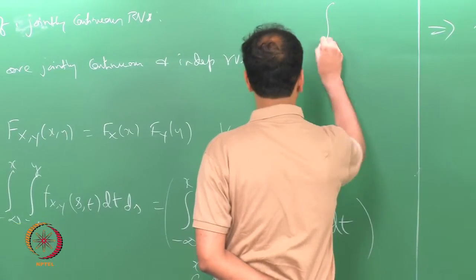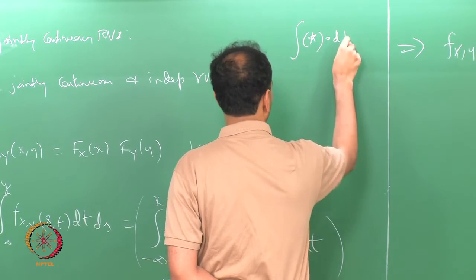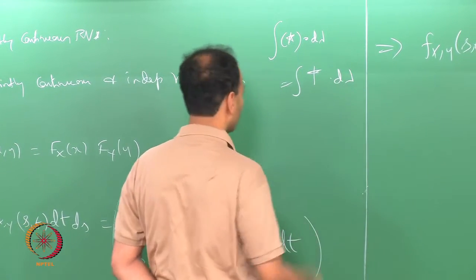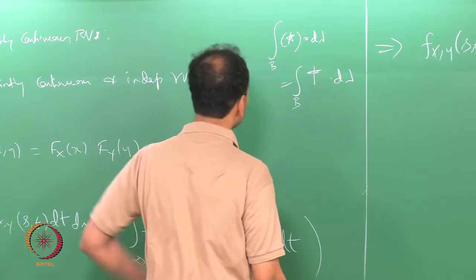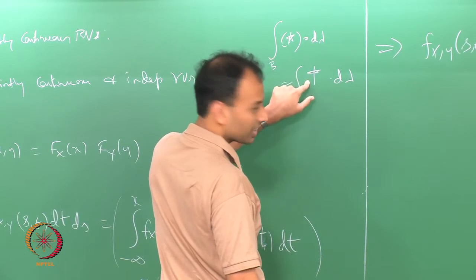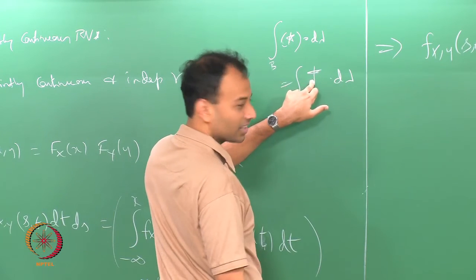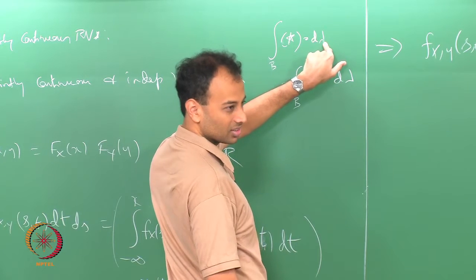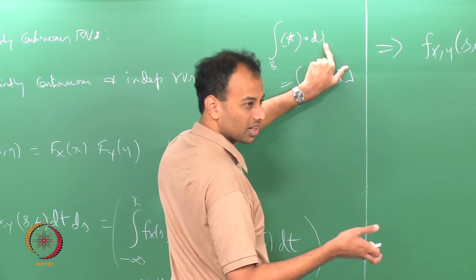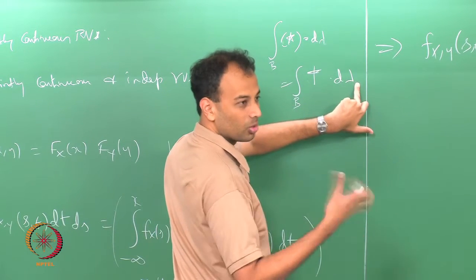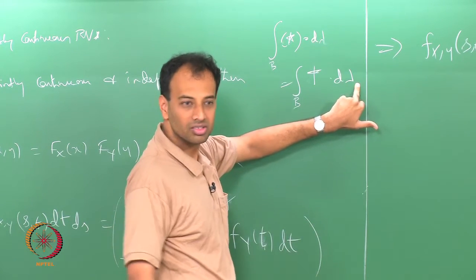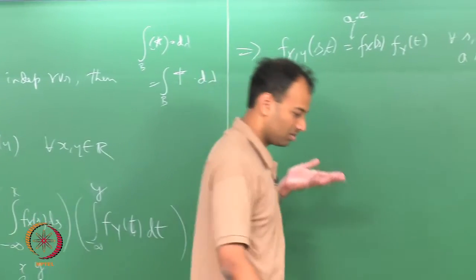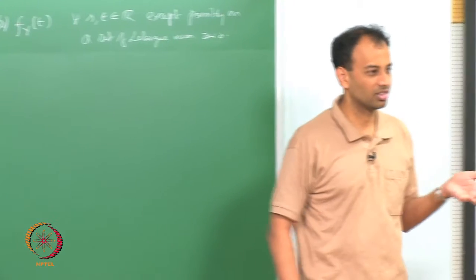What I am saying essentially is: if you have the integral of some function star equal to the integral of some function dagger with respect to lambda over the same set, and this is true no matter what set you integrate over, then star and dagger must be equal except perhaps on a set of lambda measure zero. This relation does not have to hold everywhere; it can fail on a countable set or a Cantor set — something of measure zero.